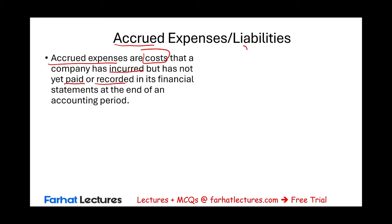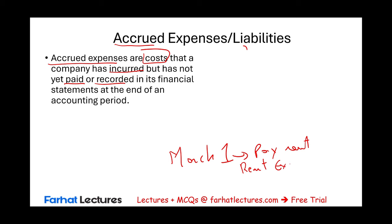In my class, I always give this example. Let's assume today is March 1st and you have to pay your rent on March 1st. If you did pay your rent, from a journal entry perspective, you debit rent expense for, say, $1,000 and you credit cash $1,000. And that's it — I paid my rent for March, rent expense is done.